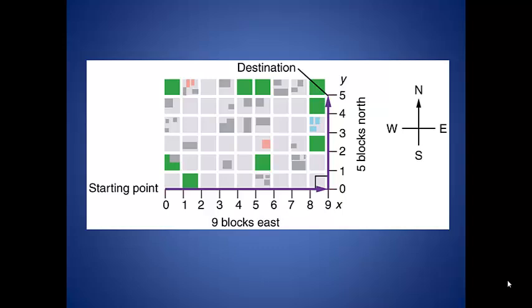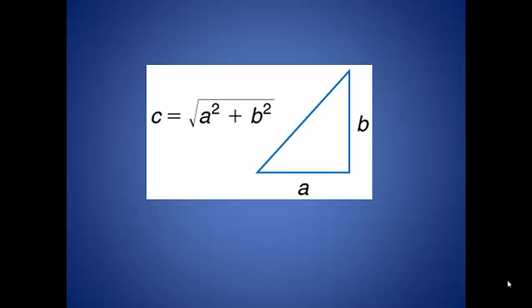In this example, you walk 9 blocks to the east and then 5 blocks to the north. Your total distance traveled is 14 blocks, but your displacement away from where you start is less than that. This forms a right triangle. We can determine the displacement using the Pythagorean Theorem.